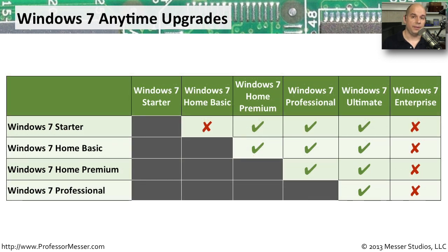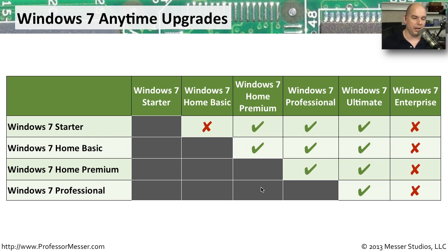If you're already running Windows 7 and you'd like to upgrade to a more powerful version through the built-in Anytime upgrade process, Windows 7 Starter can upgrade to anything except Windows 7 Home Basic and Windows 7 Enterprise. Home Basic can upgrade to anything more powerful than Home Basic. Home Premium can upgrade to anything more powerful than Home Premium. Professional can upgrade to Ultimate. Note that the Windows 7 Anytime upgrade cannot upgrade any of these versions to Windows 7 Enterprise, which is only available to large organizations with a volume licensing agreement with Microsoft.